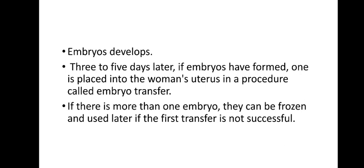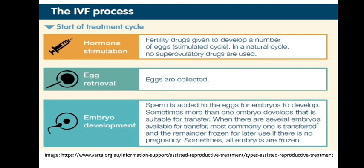Fertilization takes place in the petri dish and the blastocyst or embryo is formed. Because multiple ova were collected through induction, multiple blastocysts are formed. More than one blastocyst is released into the uterine cavity to confirm implantation, since a single blastocyst might be destroyed. If there are additional blastocysts, they are frozen — kept at very low temperature — so if the first implantation attempt fails, these can be used as substitutes.